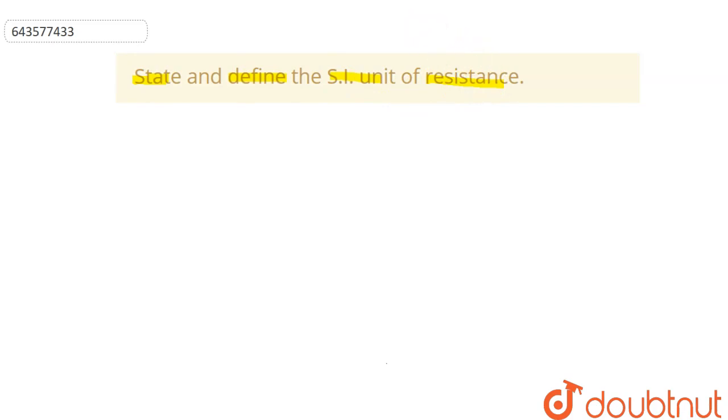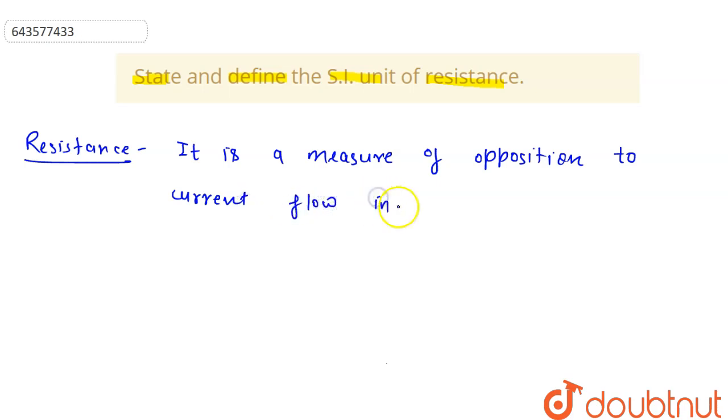First of all, we will define what is resistance. So what is resistance? It is a measure of opposition to current flow in an electrical circuit.